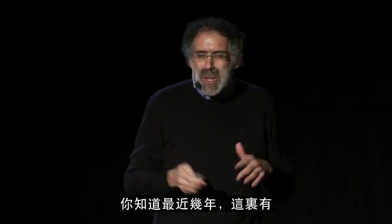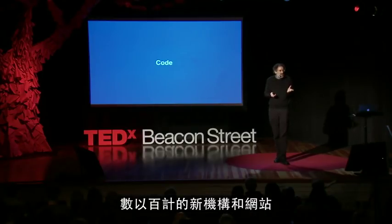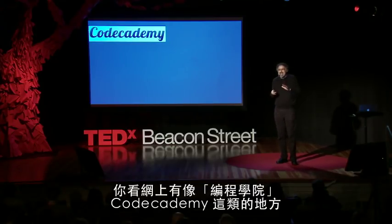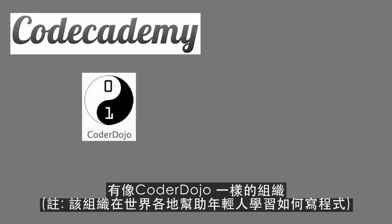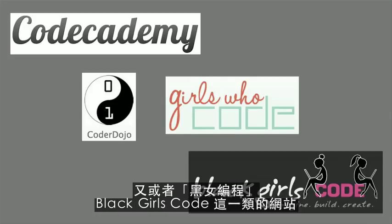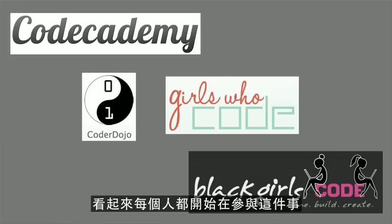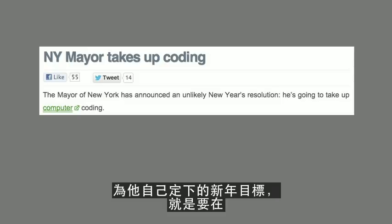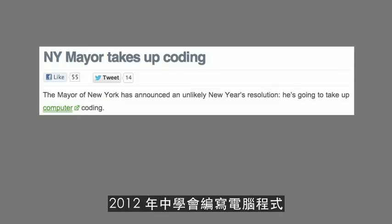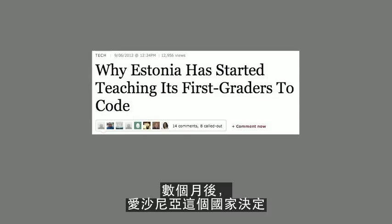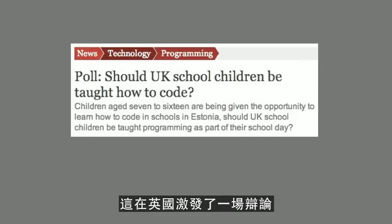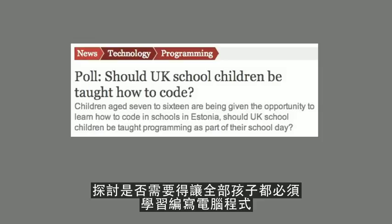In recent years, there have been hundreds of new organizations and websites helping young people learn to code — places like Code Academy, events like Coder Dojo, and sites like Girls Who Code or Black Girls Code. At the beginning of this year, New York City Mayor Michael Bloomberg made a New Year's resolution to learn to code in 2012. A few months later, the country of Estonia decided that all of its first graders should learn to code, and that triggered a debate in the UK about whether all children there should learn to code.